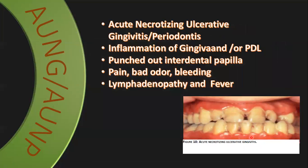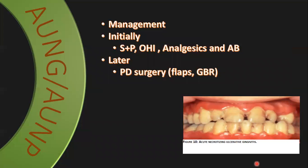Acute necrotizing ulcerative gingivitis or periodontitis is associated with poor oral hygiene. It can affect young patients too — especially the gingivitis form at exam time, due to stress and neglect of oral hygiene. The distinctive clinical feature is punched-out interdental papilla: the papilla is ulcerated and gone. Additional features include pain, bad odor, bleeding, lymphadenopathy, and fever. Initial management: scaling and polishing, oral hygiene instructions, tooth brushing, mouthwash, analgesics, and antibiotics.